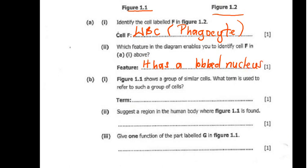And then we go to question 1(b)(i), which says, figure 1.1 shows a group of similar cells. What term is used to refer to a group of cells? So a group of cells is called a tissue, which is pretty much when you put cells together. So this is a tissue.